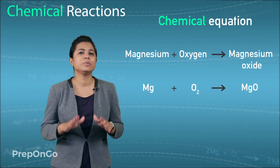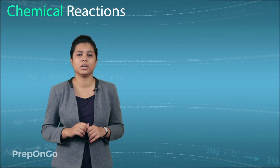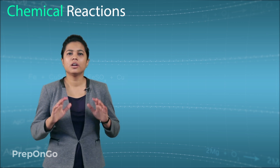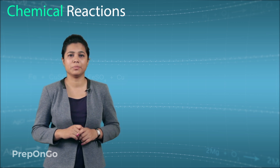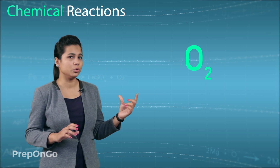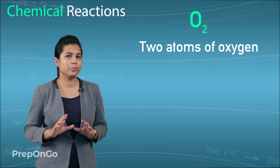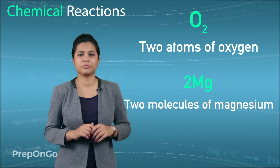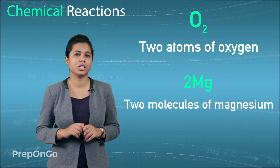We have now seen two types of equations: the word equation and the chemical equation. Let's recall a concept from ninth class — the counting of number of atoms and molecules. For example, O2 means two atoms of oxygen, while 2Mg means two molecules of magnesium. We are going to use this concept in balancing equations.